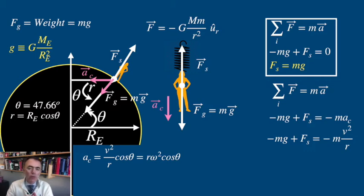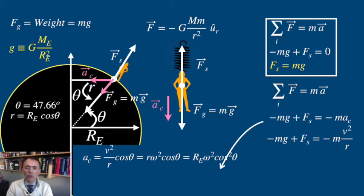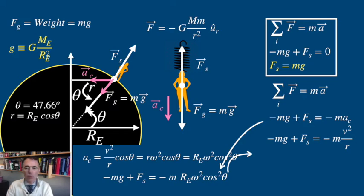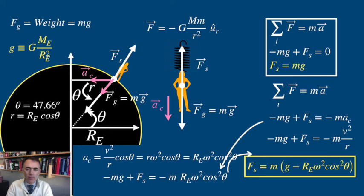Remember that lowercase r is the radius of curvature, which we can write in terms of the radius of the Earth. Now we use Newton's second law and substitute the centripetal acceleration we just derived. Solving for the force of the spring — which, remember, is measuring the apparent weight — I find the apparent weight at any latitude theta. Note that it is still smaller than the actual weight mg, but the reduced amount is not as much as in the case of the equator: it is multiplied by the cosine squared of theta.